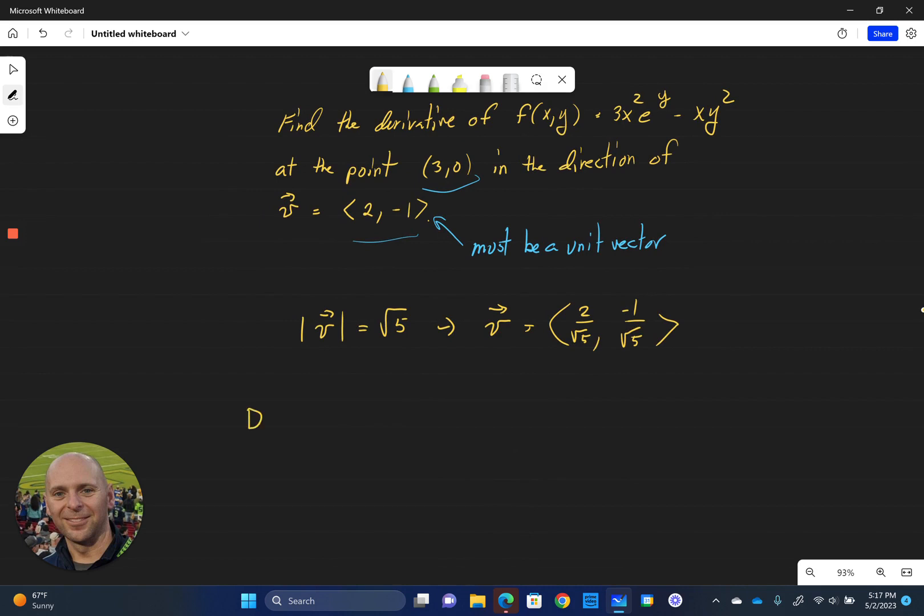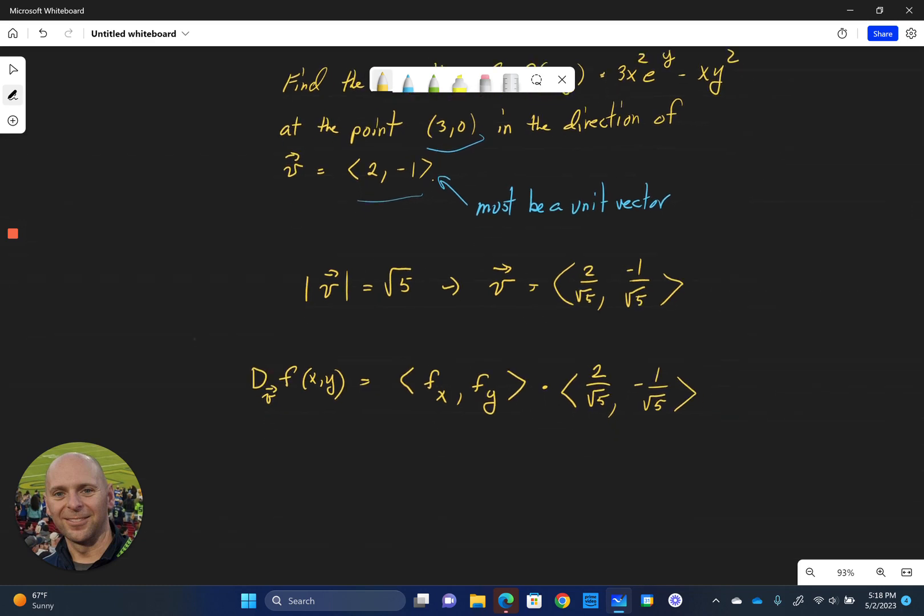And then our directional derivative, the derivative of f(x,y) with respect to the vector v, or in the direction of the vector v, is going to be equal to the dot product of the vector we get when we take the partial of f with respect to x and the partial of f with respect to y, and dot that with our vector v. So 2 over square root 5 and negative 1 over square root 5. That's the dot product we want to form.